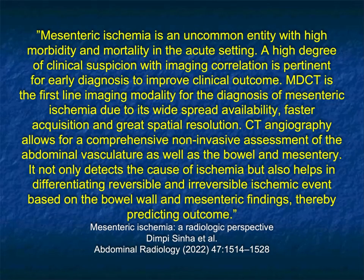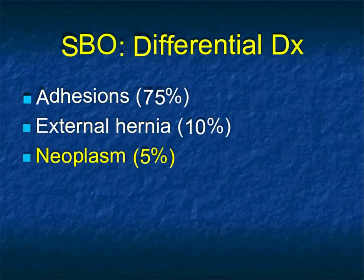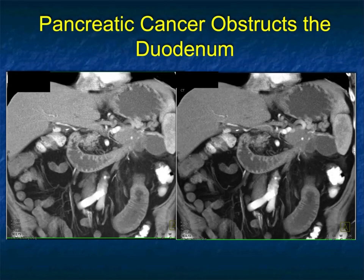The importance of CT in that regard is clearly shown in the article by Singa. In the differential diagnosis of small bowel obstruction, we've looked at adhesions, which are number one; hernia is number two; and number three is going to be tumors.